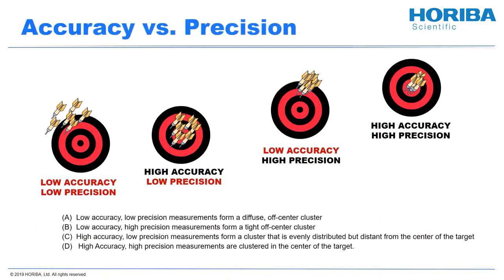Let me comment on accuracy versus precision. This is a classic illustration: if you throw darts spread out and far away from the bullseye, that's low accuracy, low precision. You can have high accuracy with a big spread — high accuracy, low precision — where your darts are spread out around the bullseye. If you have low accuracy but high precision, tightly grouped results, that's usually a pretty happy situation. Generally, once I get a measurement into the higher precision state, getting accuracy falls out pretty quickly or becomes quite easy. High accuracy, high precision is the best of all worlds. The first focus I recommend generally is precision, which comes down to repeatability.